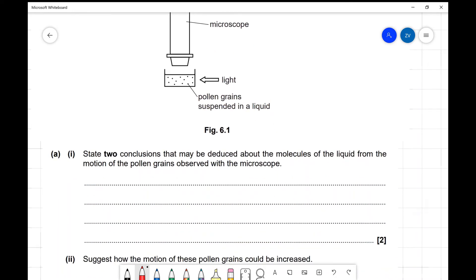Okay, well let's see. State two conclusions that may be deduced about the molecules of the liquid from the motion of the pollen grains. Just as an aside, as an explanation, what are the pollen grains actually doing?